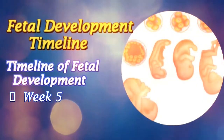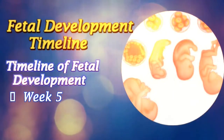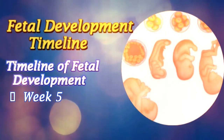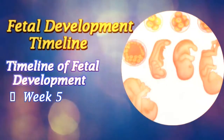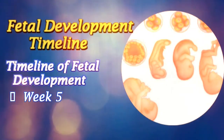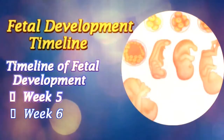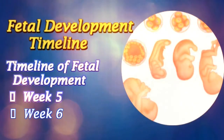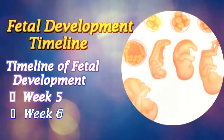Week 5: A notochord forms in the center of the embryonic disc and a neural groove forms over the notochord. A primitive heart tube also starts forming.